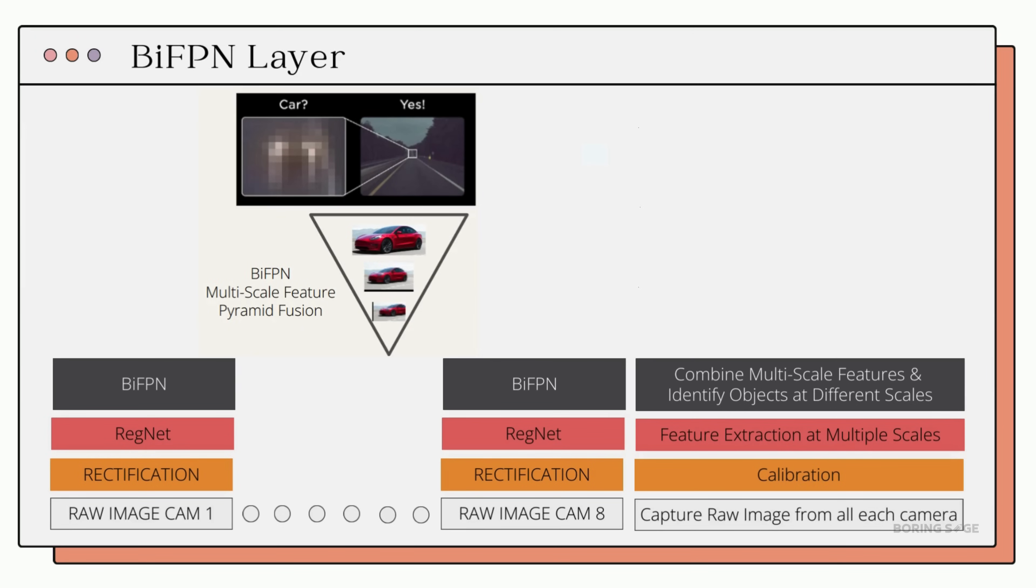Next is the Bidirectional Feature Pyramid Network or BiFPN layer. This layer takes all the features extracted by RegNet and combines them, helping the system recognize objects at various distances. Think about it like this: if you are driving, you need to spot a car far ahead of us while also being aware of a pedestrian right next to you. The BiFPN layer ensures Tesla can accurately detect and process objects both near and far, giving it a more comprehensive view of the road.